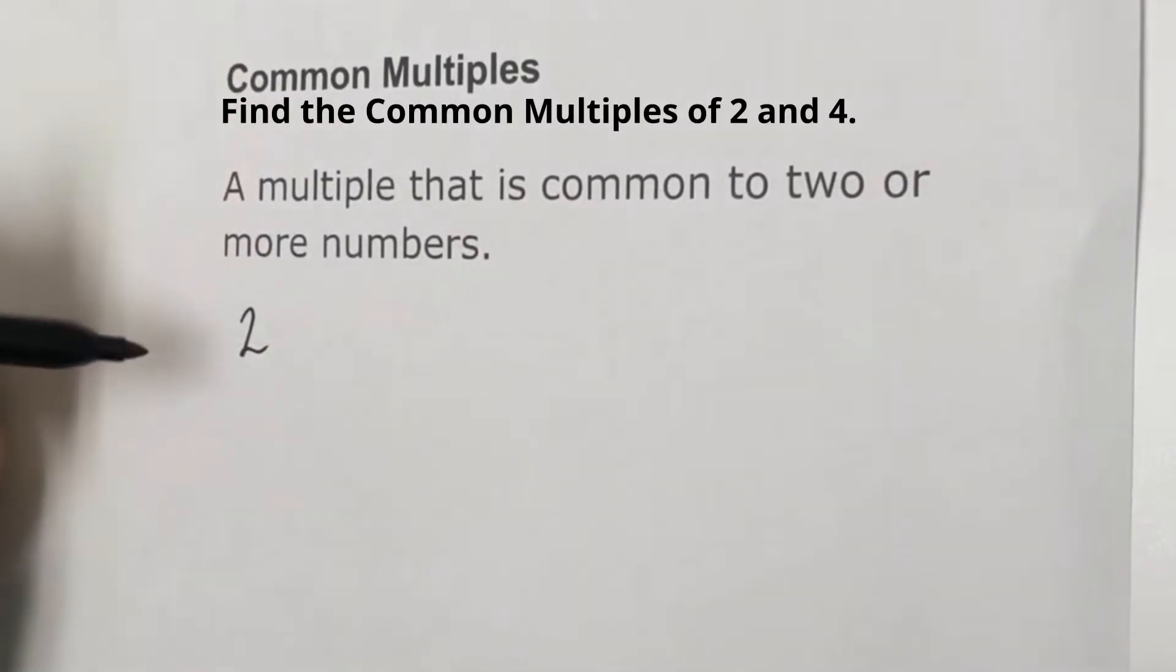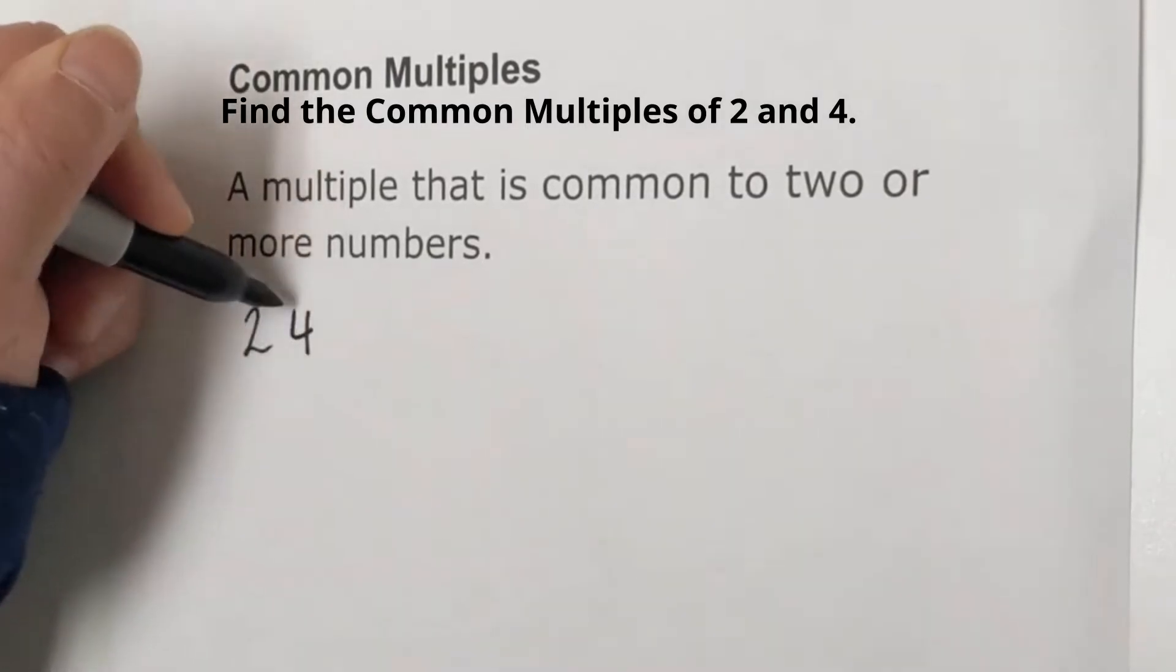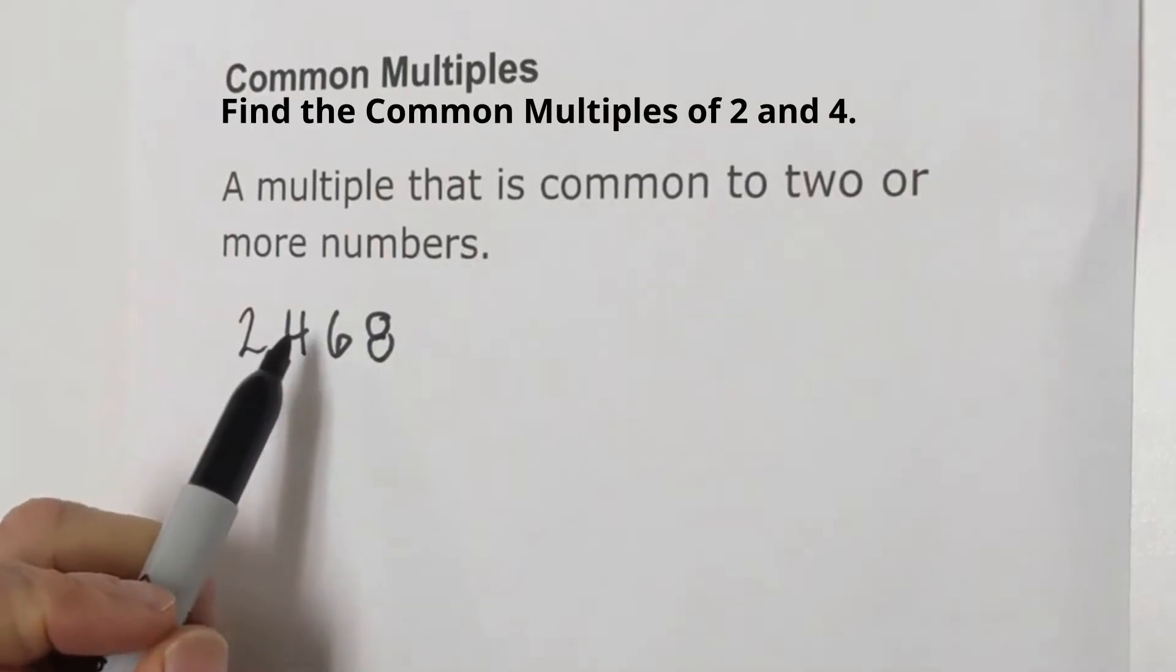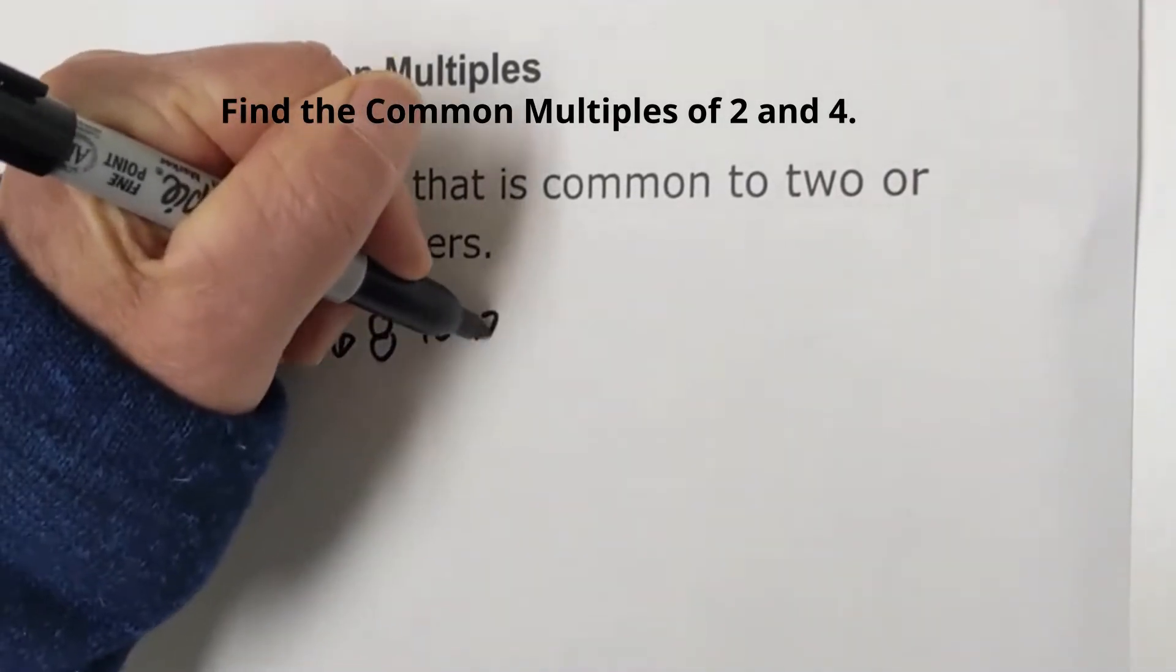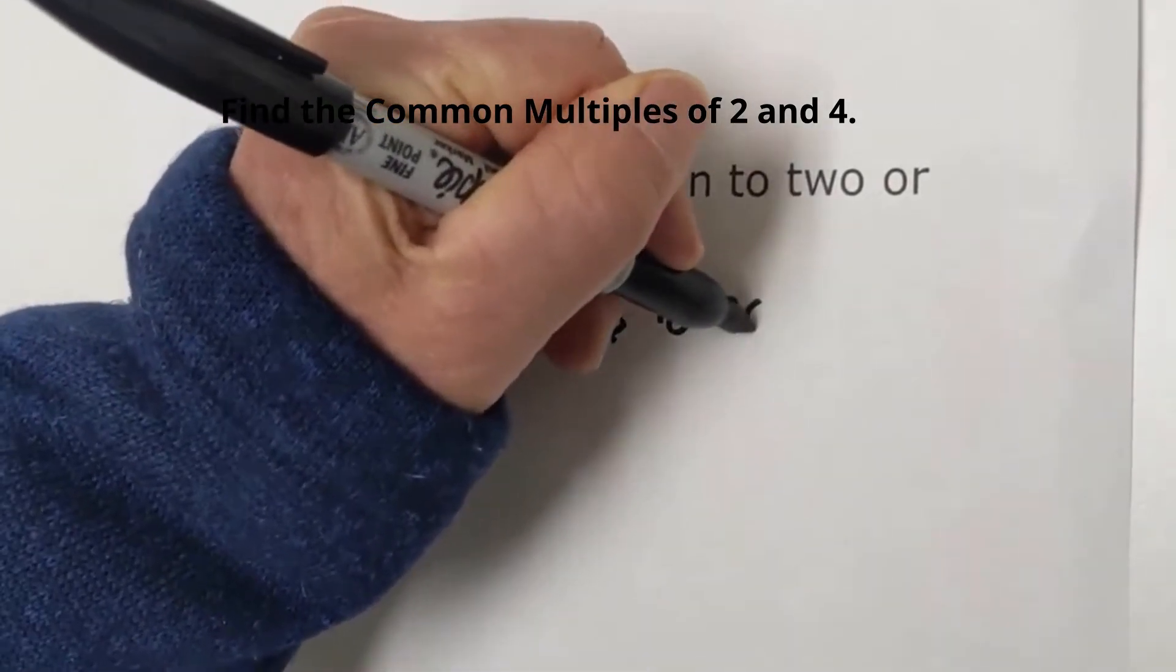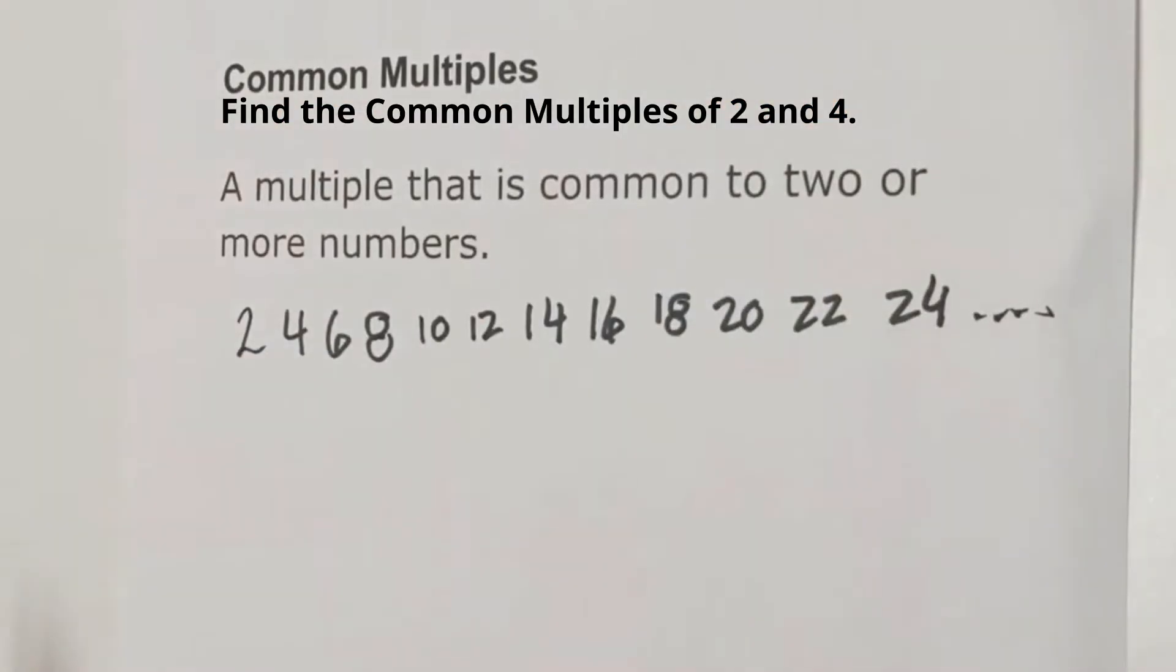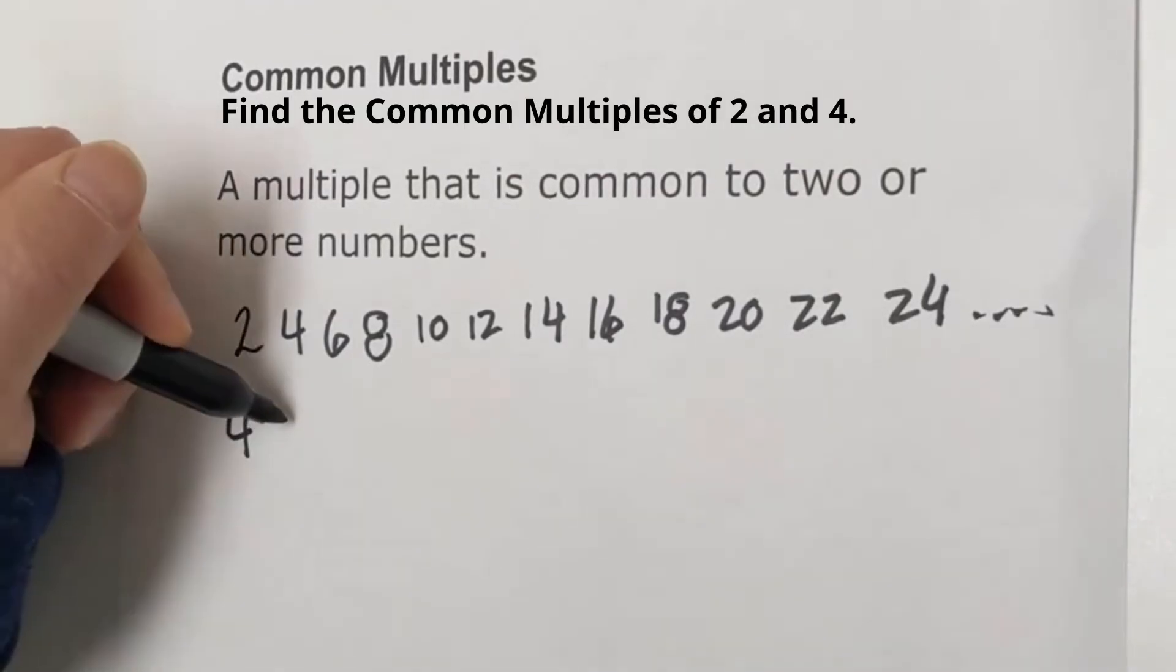We have two. The multiples of two are numbers that you add two to, so it'd be two, four, six, eight. What I'm doing each time is adding two to each number, so it's a multiple: 10, 12, 14, 16, 18, 20, 22, 24, and I could go on to infinity.